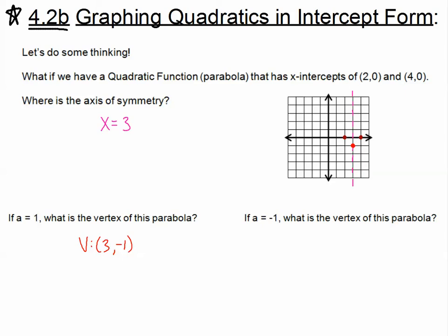One last question: what if a is equal to negative 1? What is the vertex of this parabola? Again, the vertex has to be somewhere along the axis of symmetry. If a is negative 1, we open upside down. We'd go right 1, down 1, left 1, down 1 — so the vertex would be at (3, 1).